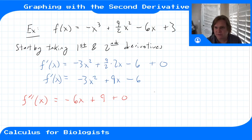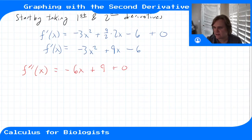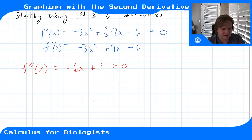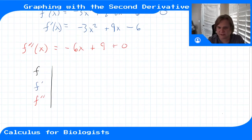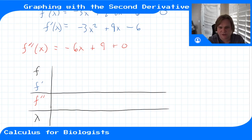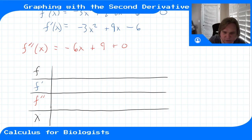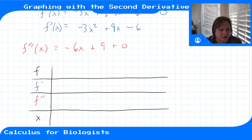In order to understand what this function looks like, we need to know where the first and second derivatives are positive or negative. Let's make a table with f, f', and f'' as columns, and pick some relevant x values. We should start by finding where these derivatives equal zero, and then look at the function's behavior around those points.